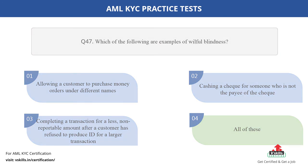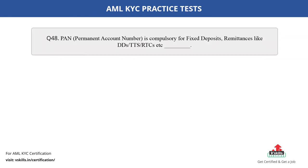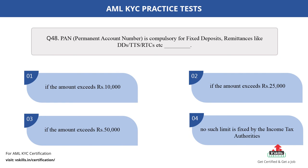Question number 48. PAN (Permanent Account Number) is compulsory for fixed deposits, remittances like DDs, TTs, or RTCs, etc. Fill in the blank. The options are: A. If the amount exceeds 10,000 rupees; B. If the amount exceeds 25,000 rupees; C. If the amount exceeds 50,000 rupees; D. No such limit is fixed by the income tax authorities. The correct answer is option C.